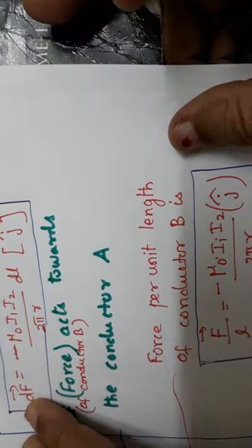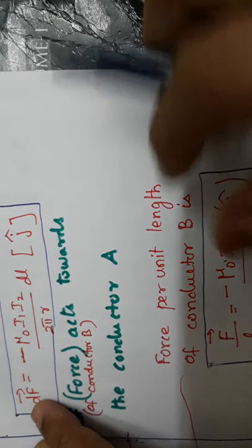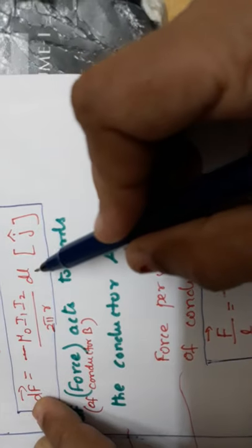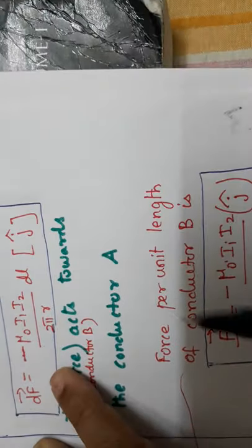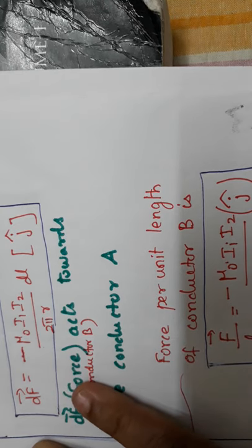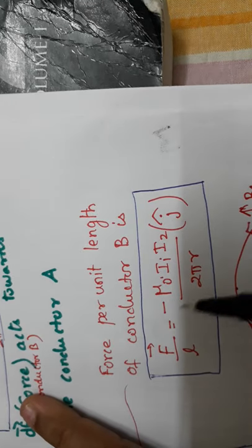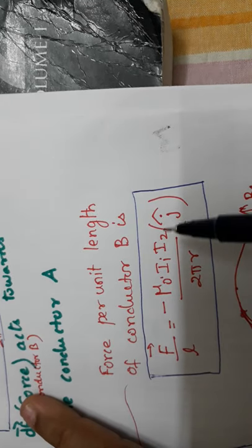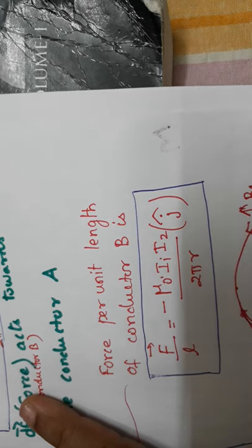This is the Lorentz force for an elementary length. For force per unit length: F/L = −μ₀i₁i₂ / 2πr · j-cap. Note down this formula.